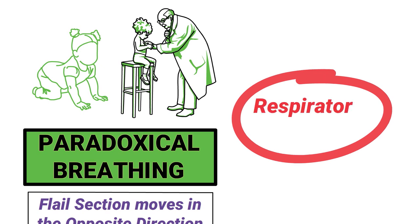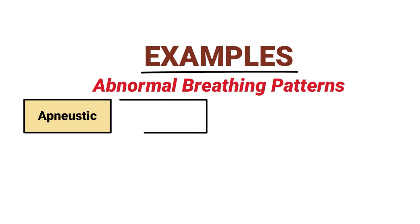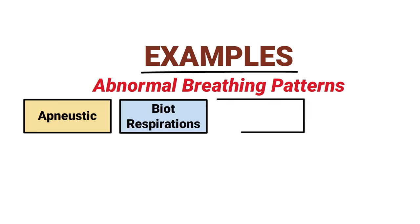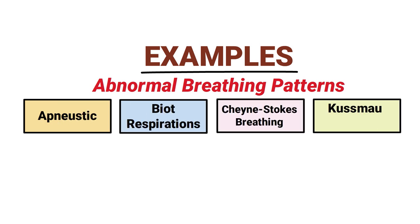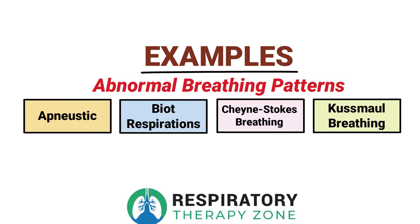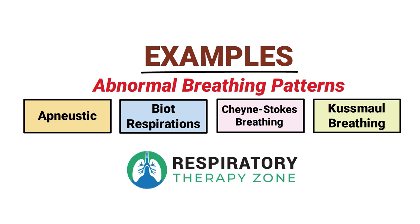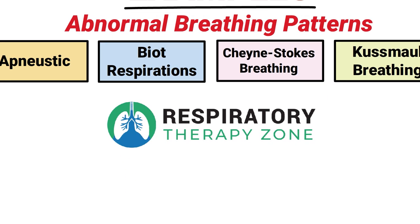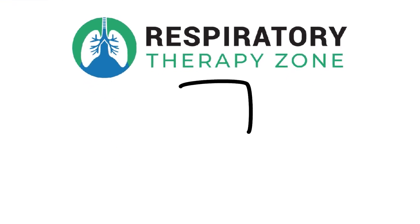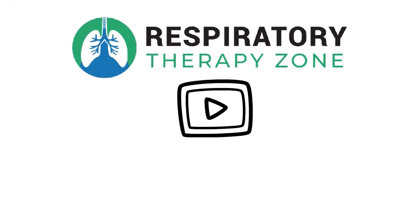This abnormal pattern may also be seen in infants and children, where it is a sign of respiratory distress. Some other examples of abnormal breathing patterns include apneustic breathing, Biot respirations, Cheyne-Stokes, and Kussmaul breathing, each of which are patterns discussed in other videos on the channel.